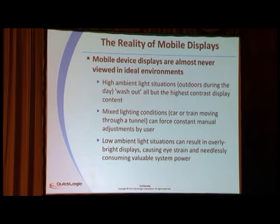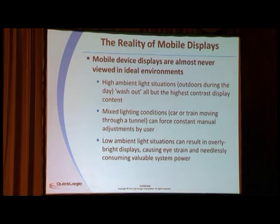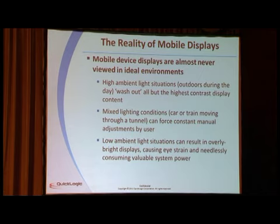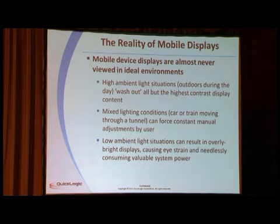In high ambient light situations, if you go outside during the day and try to watch a video on your smartphone, the display is actually washed out — you can't see anything. In mixed lighting conditions, like a car or train moving through a tunnel, you may have to manually change the brightness. Sometimes you can see your display, sometimes you can't. This is obviously a user experience problem. And in low ambient light situations, displays can be overly bright, causing eye strain and needlessly consuming system power.